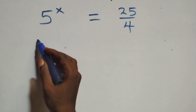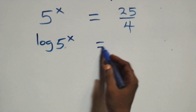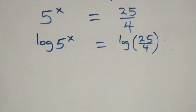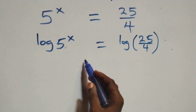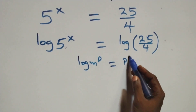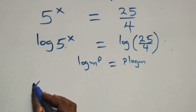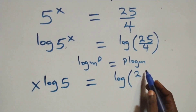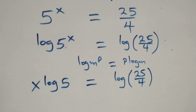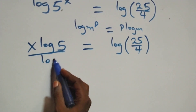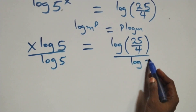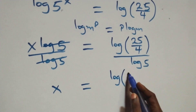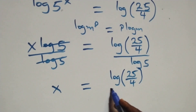Next, we take the log on both sides: log of 5 raised to power x equals log of 25 over 4. We apply the power rule of logarithms — log m raised to power p equals p log m — so this becomes x log 5 equals log 25 over 4. We then divide both sides by log 5, giving x equals log(25/4) divided by log 5.